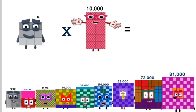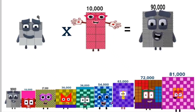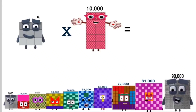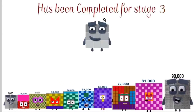Times 10,000 equals 90,000. Stage 3 has been completed.